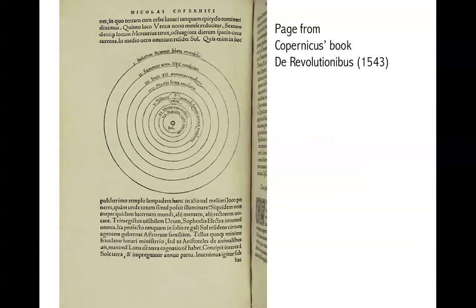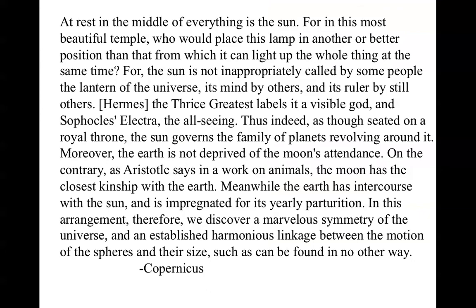This is a picture from Copernicus' book, De Revolutionibus. There's a copy of this book in the Rare Books Collection at UT, which we've seen at some exhibits. It's quite amazing — a rare thing to have, and quite phenomenal to look at in person. This is a quote from the book explaining the essence of the idea, with the sun in the middle and the planets moving around it. You can pause here if you want to read it in more detail.